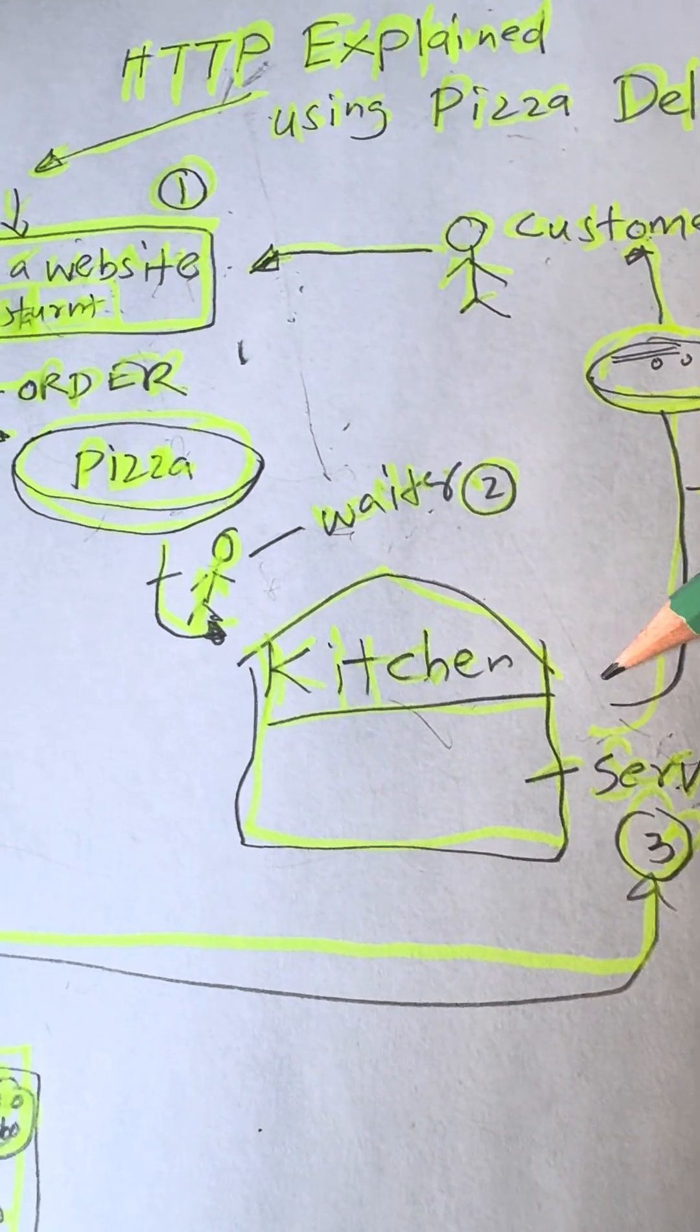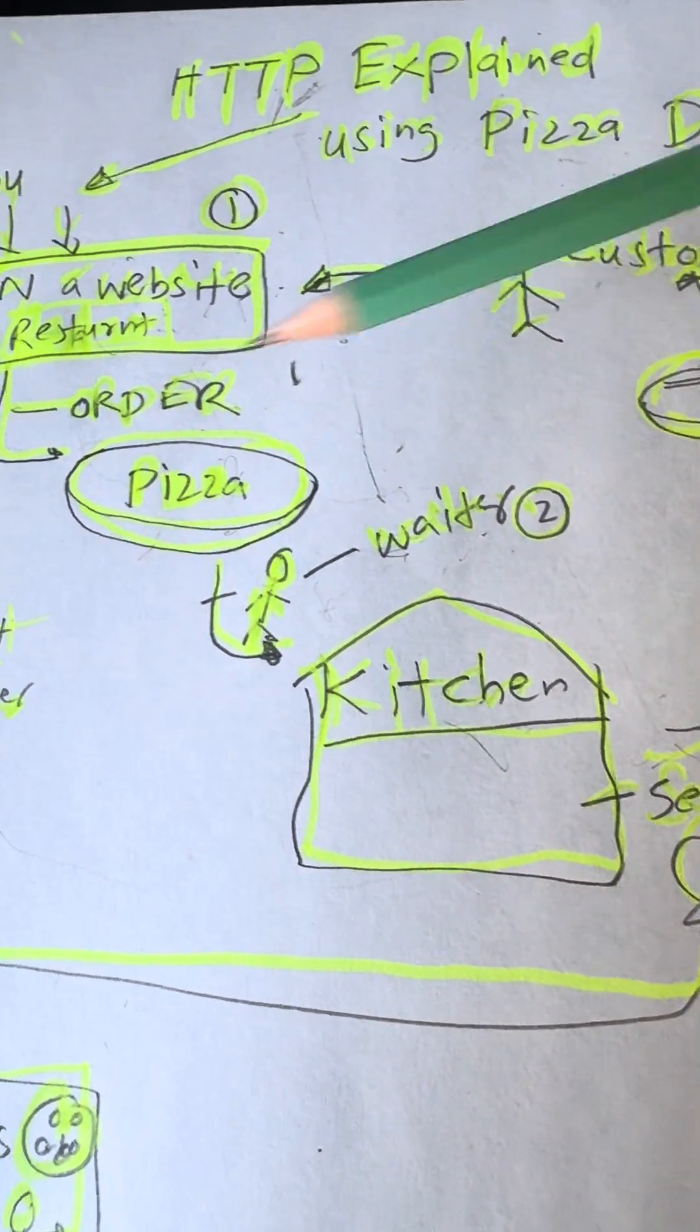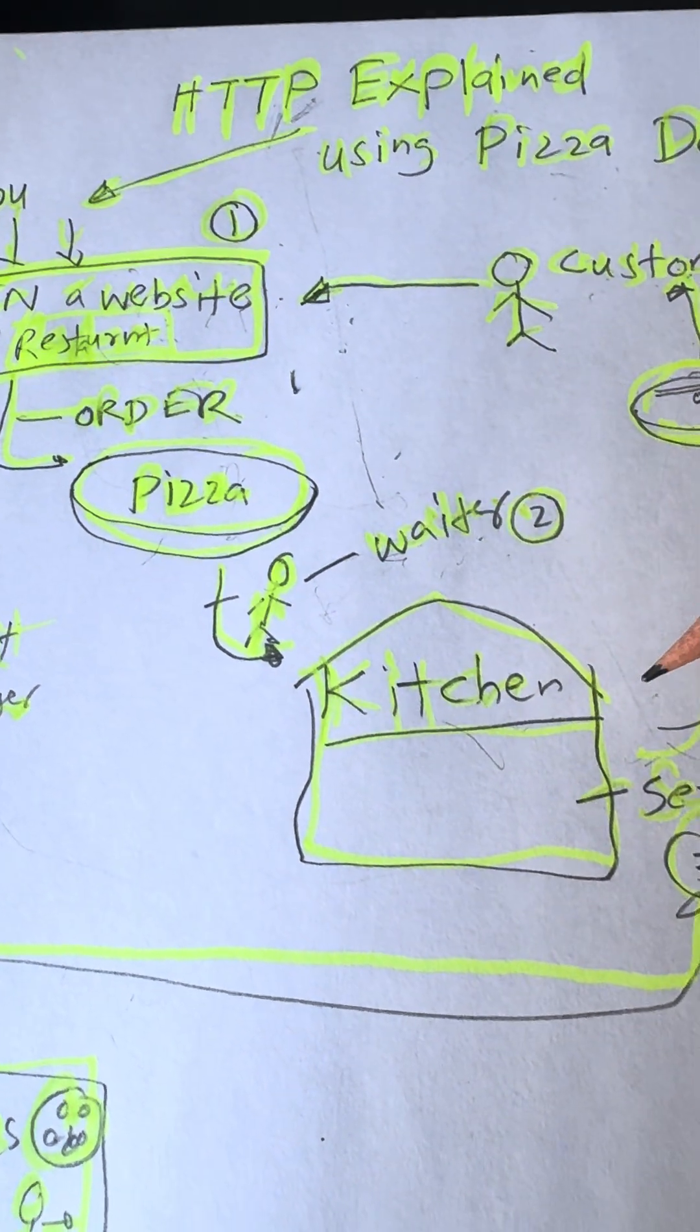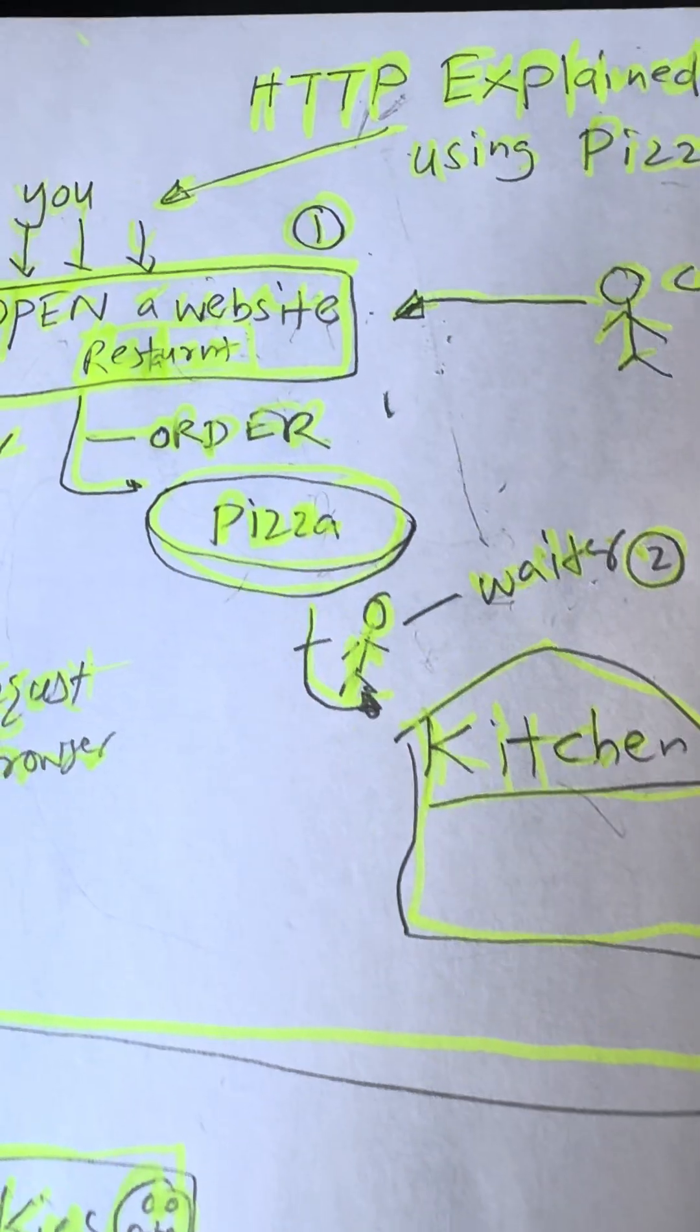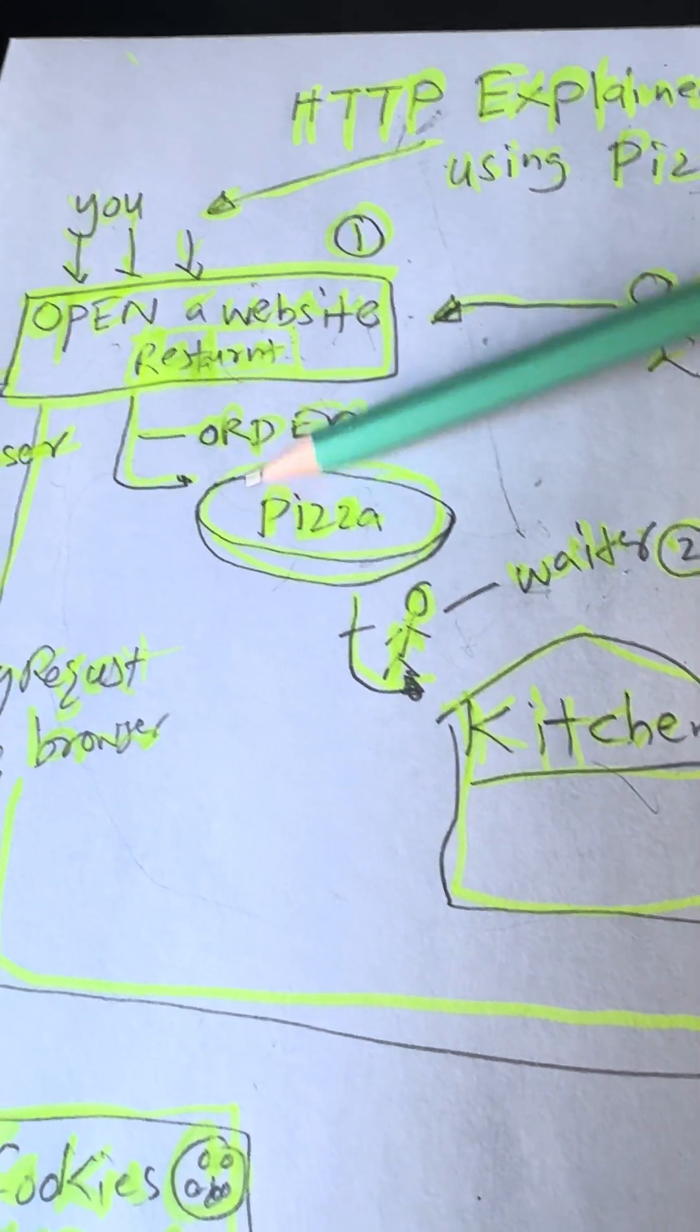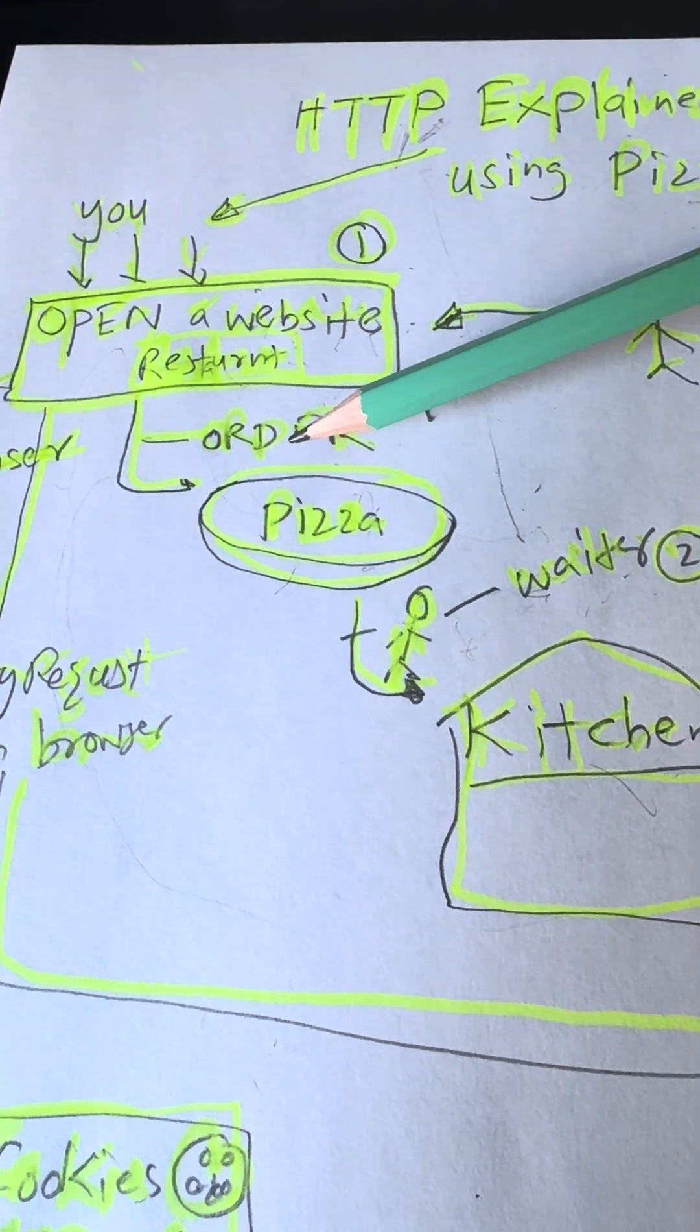HTTP picks up the data and delivers it right to your screen, just like a waiter brings pizza straight to your table. So next time when you open a website, remember this: you are just ordering data through your digital waiter, which is HTTP.